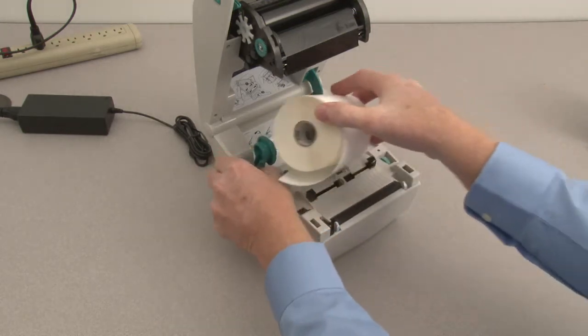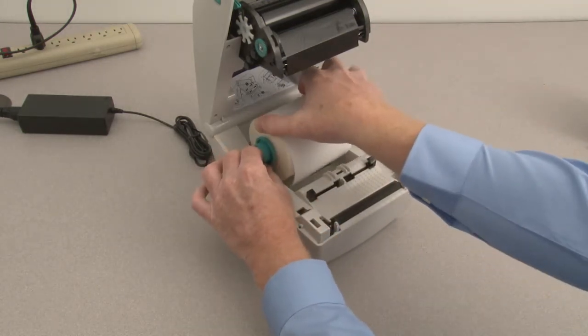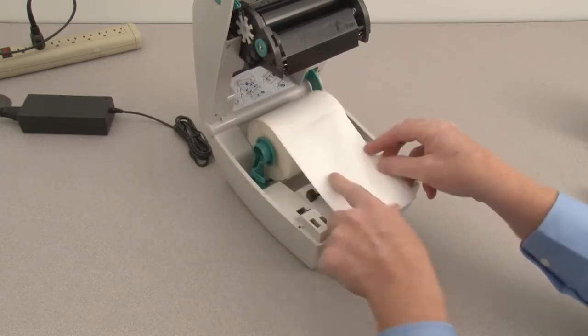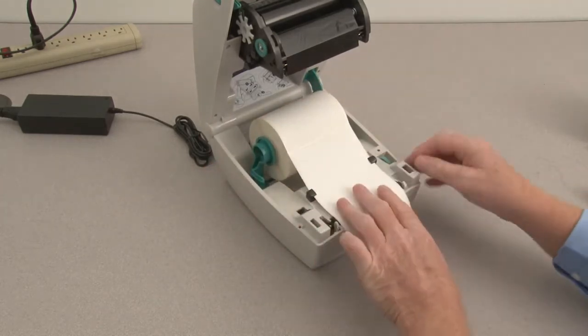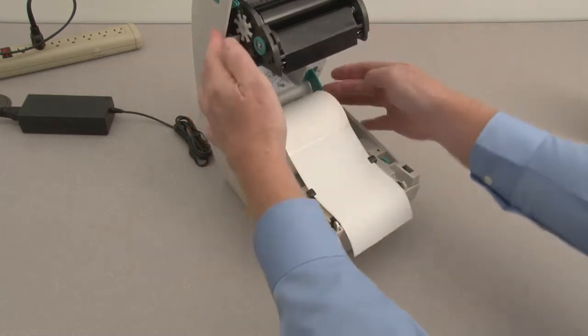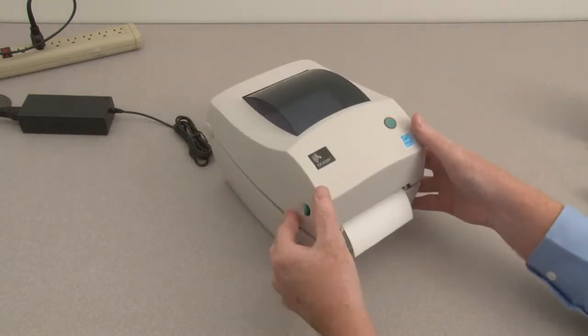Place the supply media in the roll holder. Position the media between the guides and out the front of the printer. Adjust the guides so they just touch the edge of the media. Close the printer.